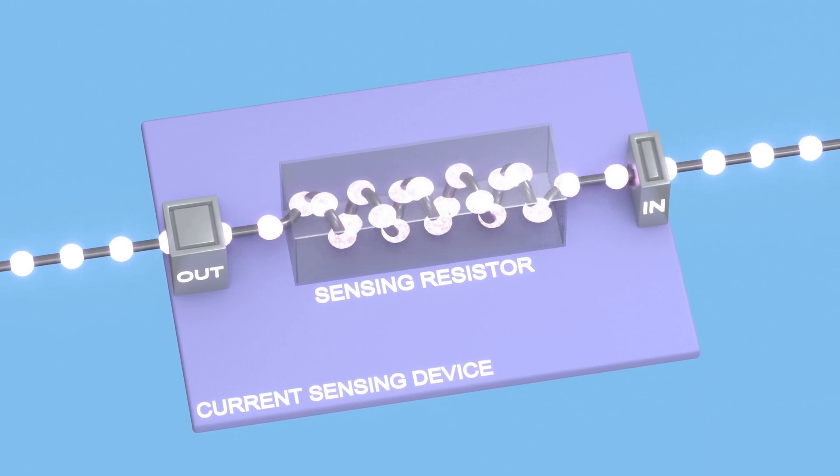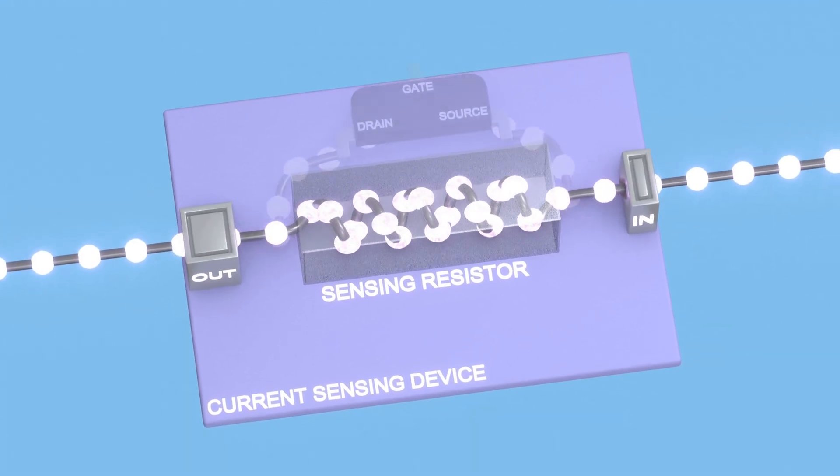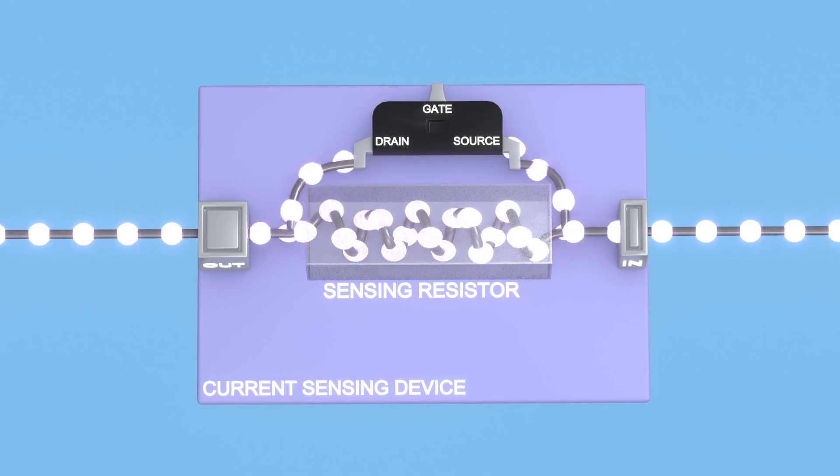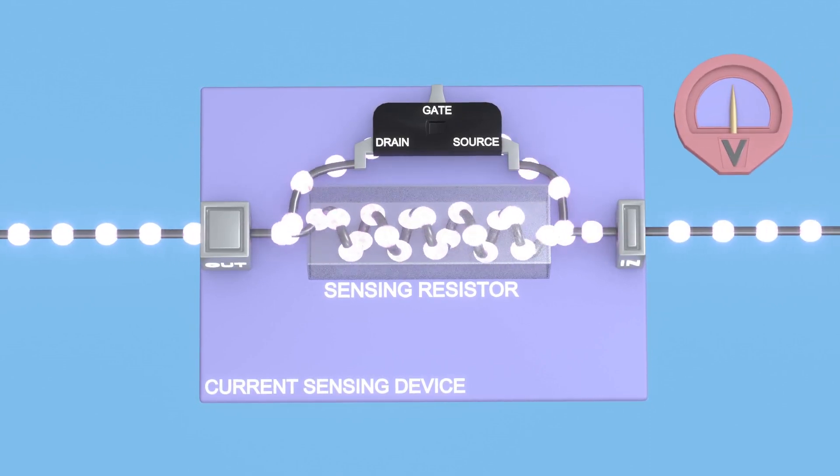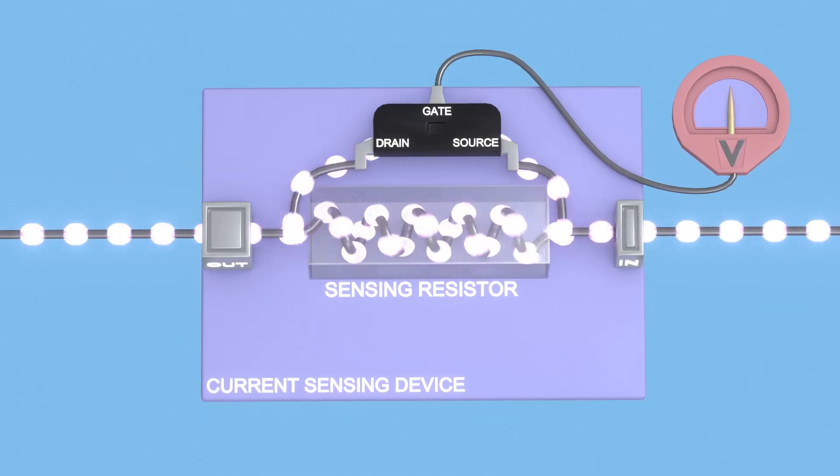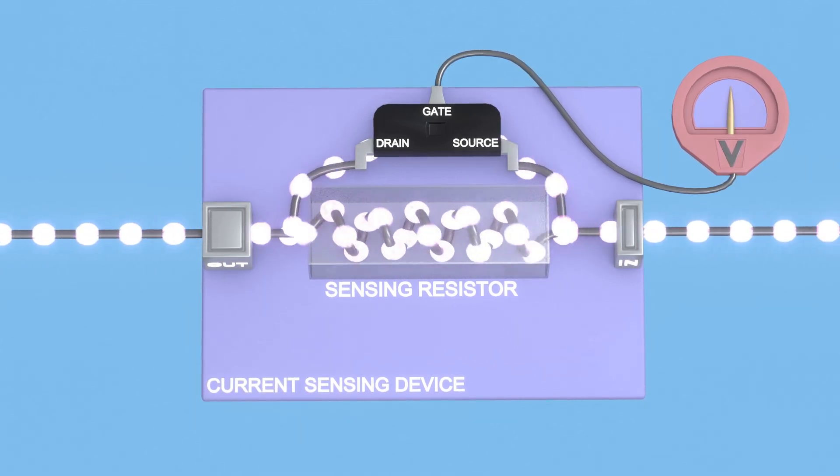To measure this voltage drop accurately, we use a MOSFET transistor connected in parallel to the sensor resistor. The gate of the MOSFET transistor is used to read the change in voltage across the terminals. If the voltage across the terminals changes, the gate terminal will exhibit a proportional change.